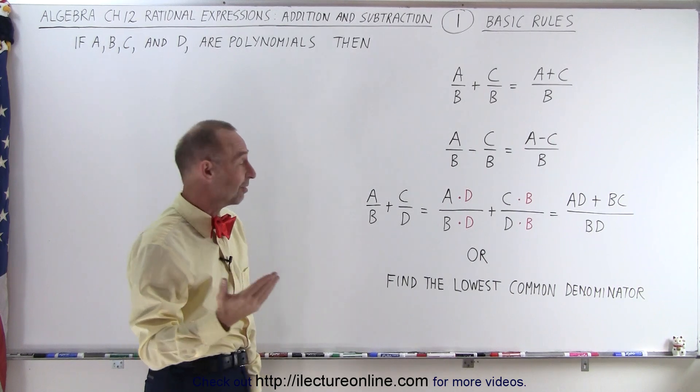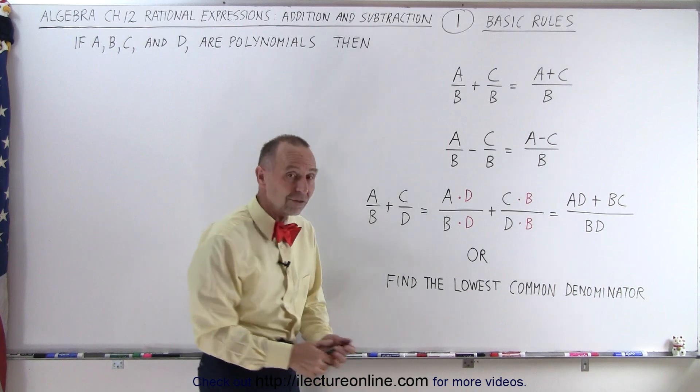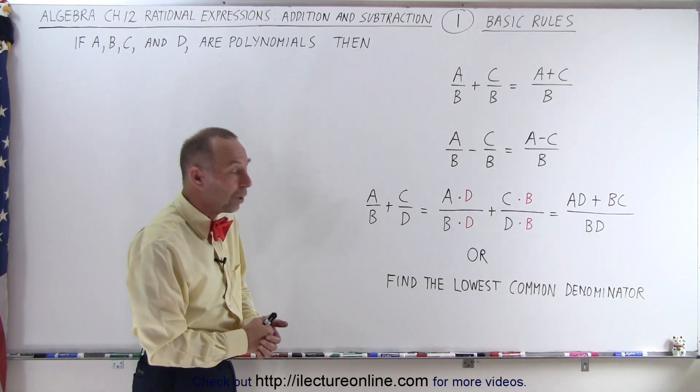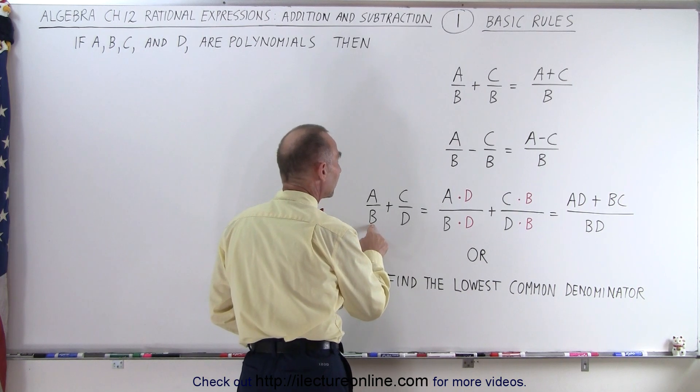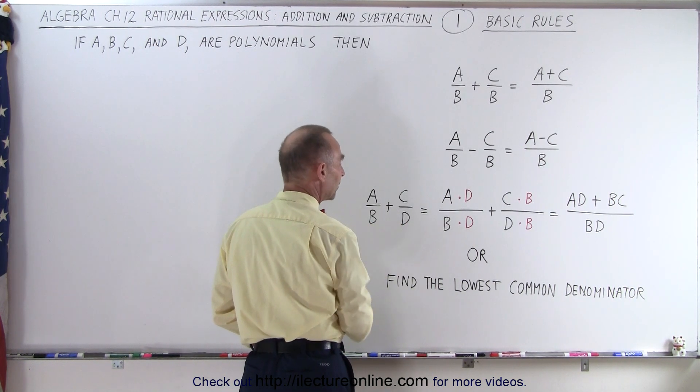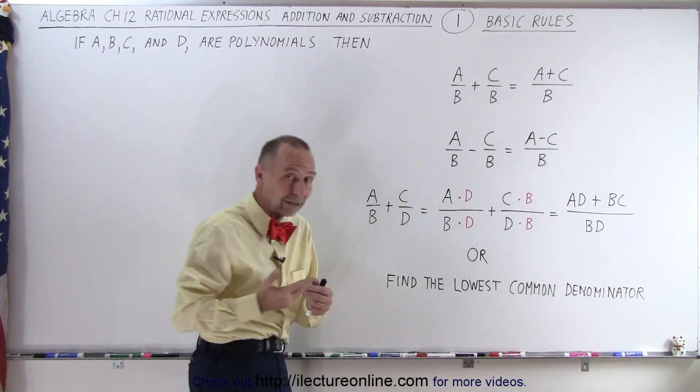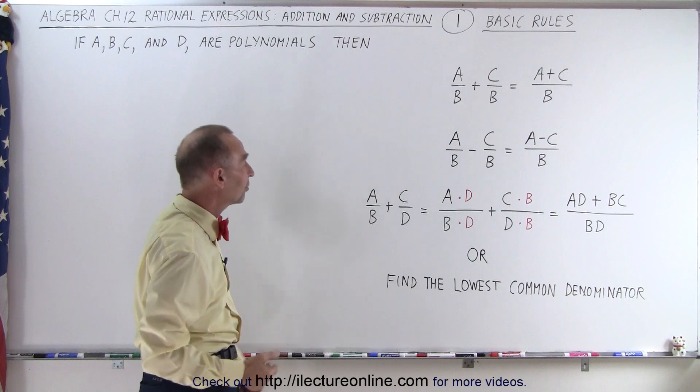But what if the denominators are not the same? For example, here the denominator is B and there the denominator is D. They're not the same. So one way to make them the same is to multiply the left denominator by the other denominator and the right denominator by the first denominator. But of course, if you multiply the denominator by something, we must also multiply the numerator by something.